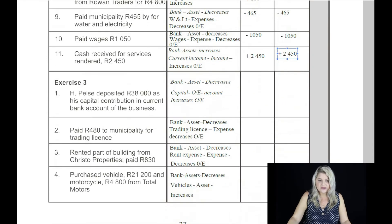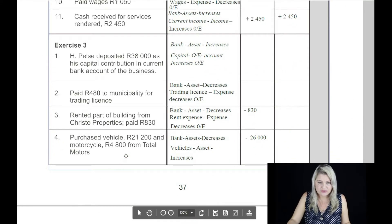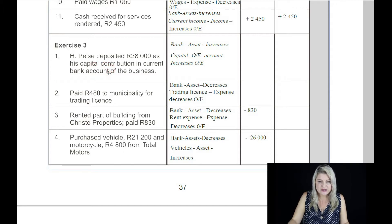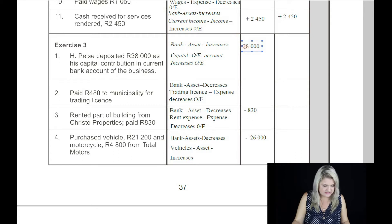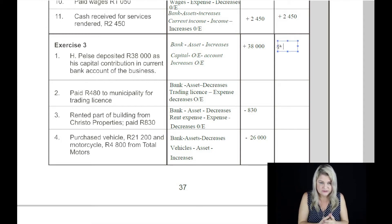We have done exercise two. Now we can do exercise number three. We are now on exercise three, page 37 of your Grade 8 accounting workbook. Transaction number one: H. Pulsar deposited 38,000 Rand as his capital contribution into the current bank account of the business. Bank is an asset and that is increased by 38,000 Rand because that's where the money's going to go. And the other account is capital — capital is an owner's equity account and it increases owner's equity when money is put into the capital account.